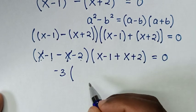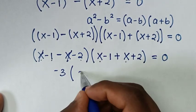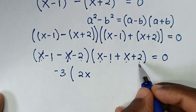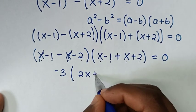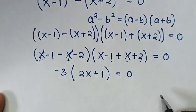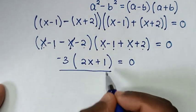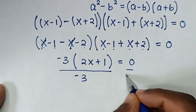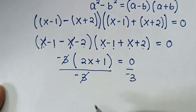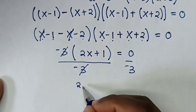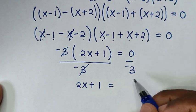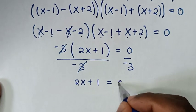So it will be negative 3, then bracket: x plus x is 2x, and negative 1 plus 2 is plus 1, so it's (2x plus 1), bracket equal to 0. In the next step we divide by negative 3 on both sides, so this cancels and we get 2x plus 1 is equal to 0.